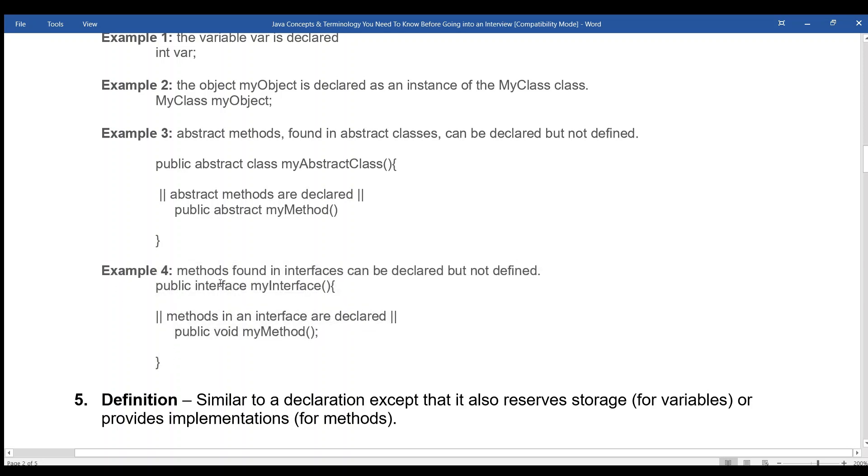Example 4: methods found in interfaces can be declared but not defined. public interface myInterface. Methods in an interface are declared: public void myMethod.